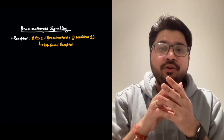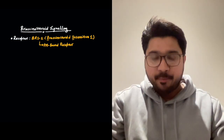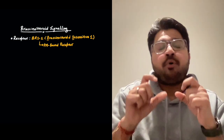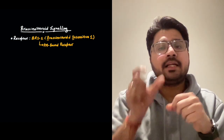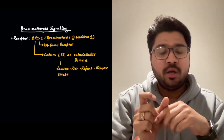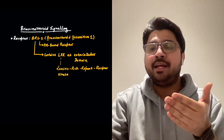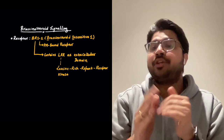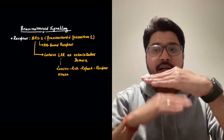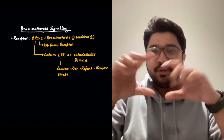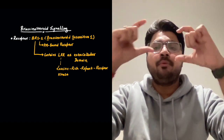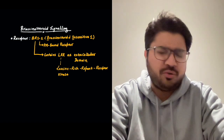The brassinosteroid signaling receptor BRI1 is a plasma membrane-bound receptor. An important feature asked in competitive examinations is that it contains LRR — Leucine Rich Repeat receptor kinase. LRR is an extracellular domain, meaning it is present above the membrane, not transmembrane or intracellular.